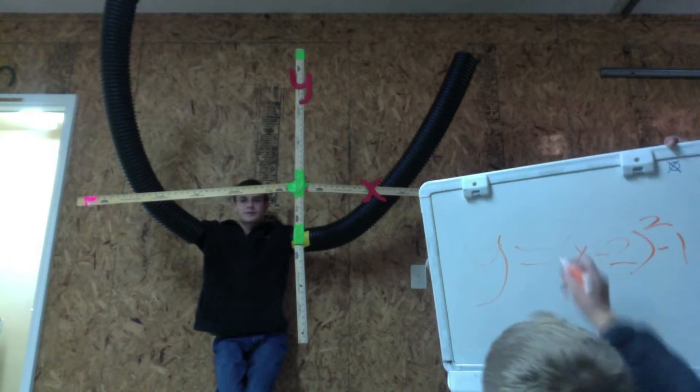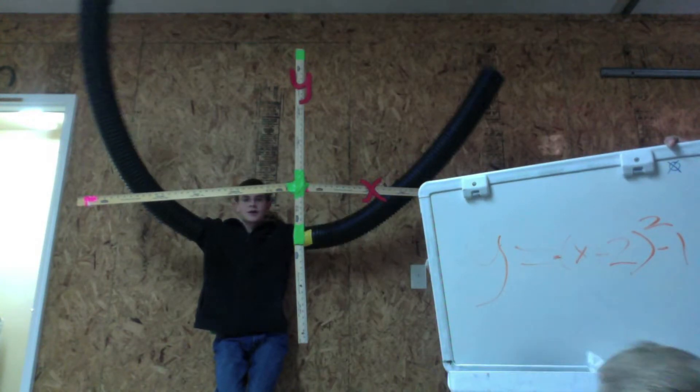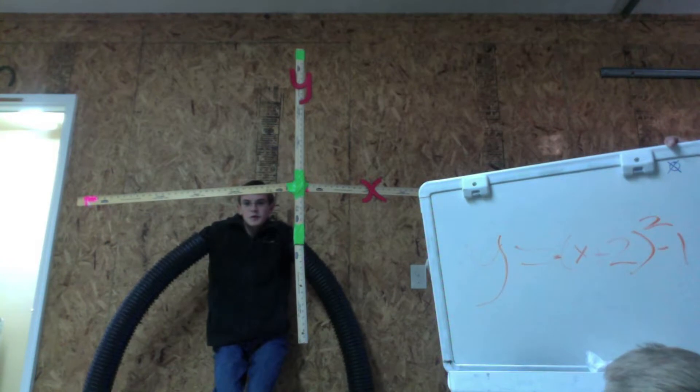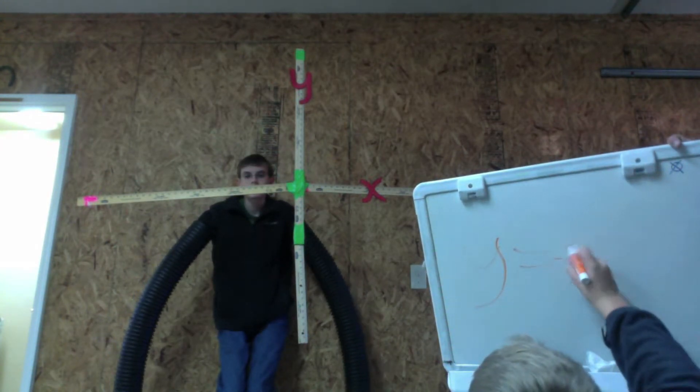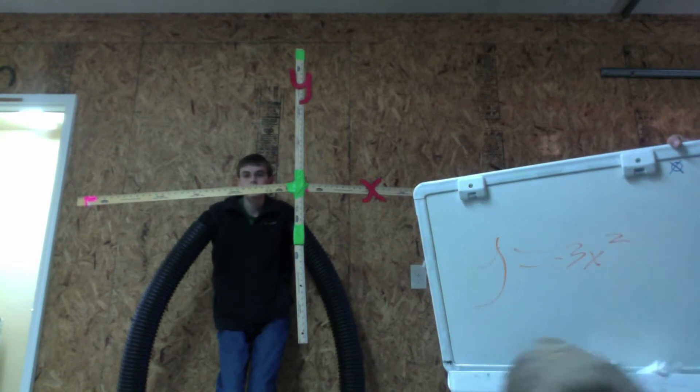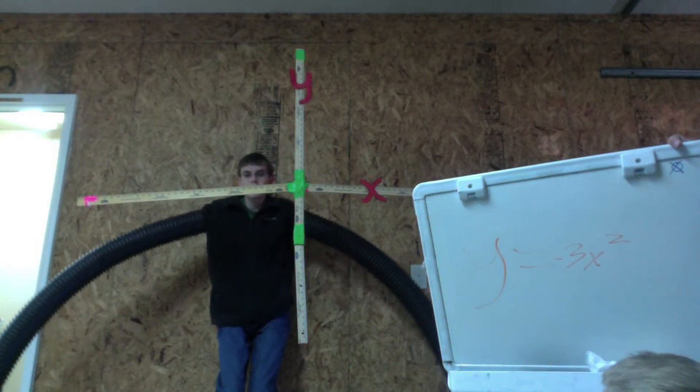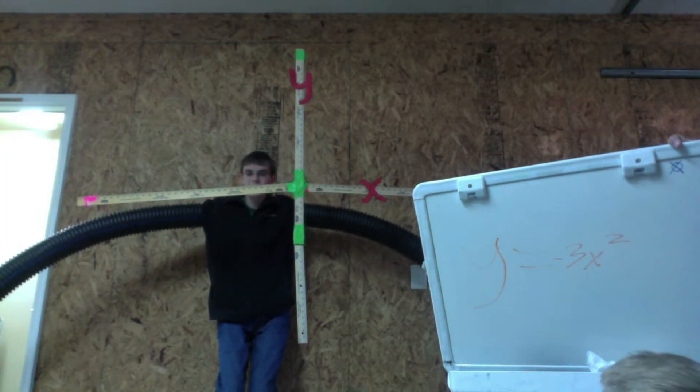Now we're adding a negative. Look how it affects the parabola. y equals negative 0.3x squared. There is another vertical shrink. It is negative, thus there is a frowny face.